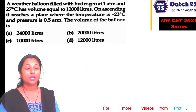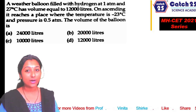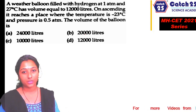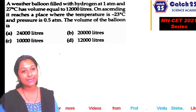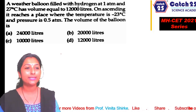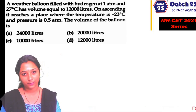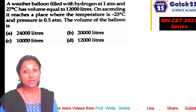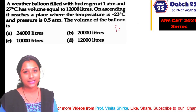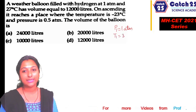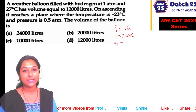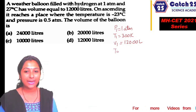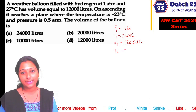Next question: A weather balloon filled with hydrogen at 1 atmosphere and 27 degrees Celsius has a volume of 12,000 litres. On ascending, it reaches a place where temperature is minus 23 degrees Celsius and pressure is 0.5 atmosphere. What will the volume of the balloon be? Given: P1 = 1 atm, T1 = 300 K, V1 = 12,000 litres.